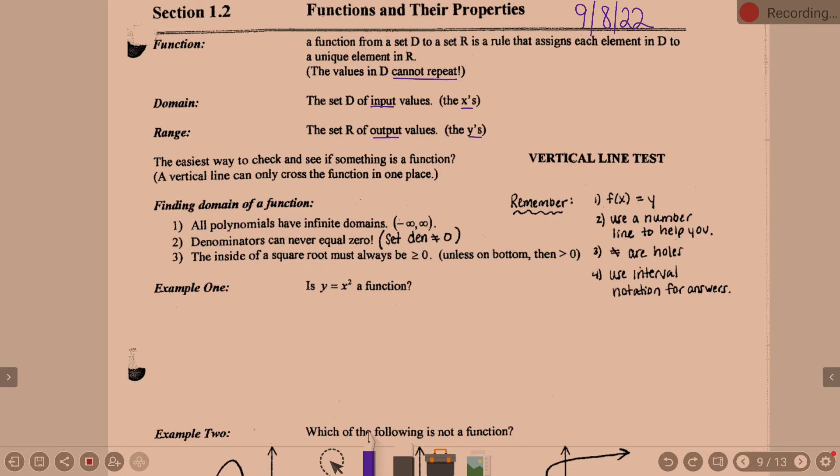And the easiest way to check and see if something is a function, I just mentioned this, yes. Vertical line test is the easiest way. If you have a graph, it's the easiest way is you draw the vertical line. Does it cross the function in only one place at a time? If you draw a vertical line and it touches a function twice on the same vertical line, then it fails the test and it's not a function.